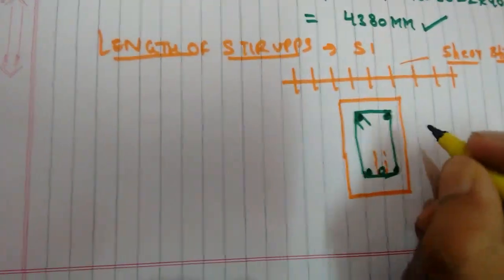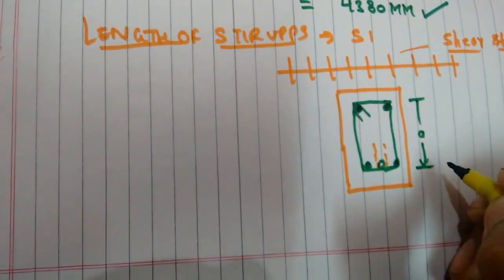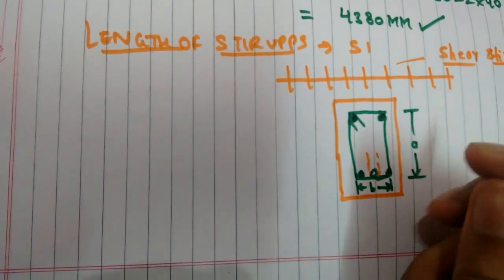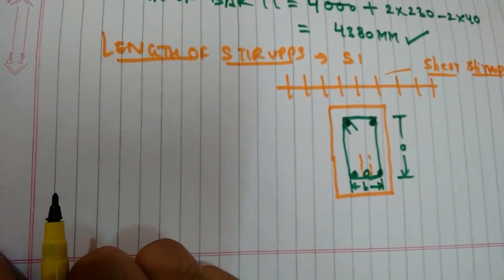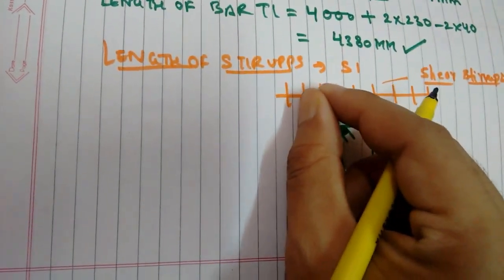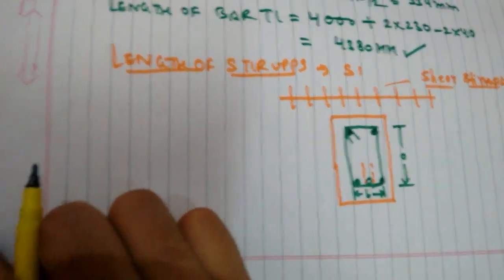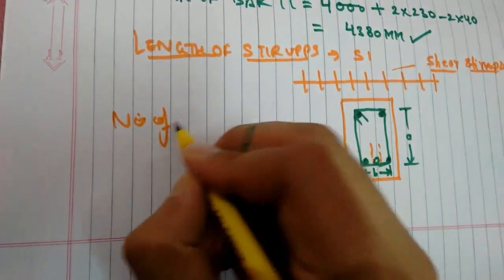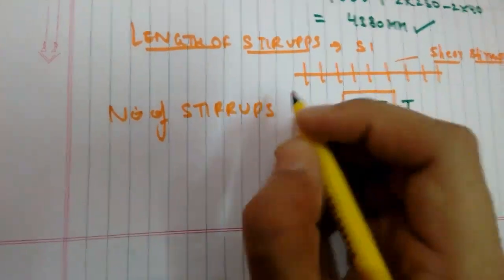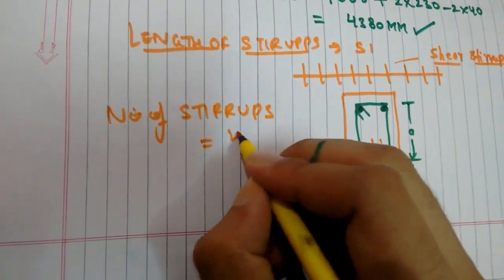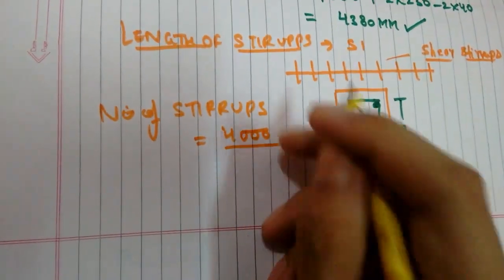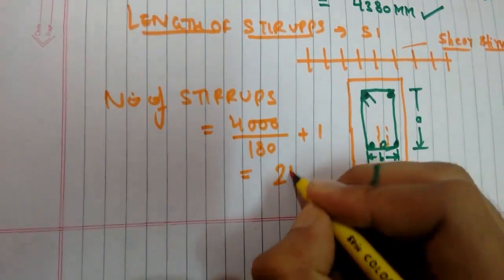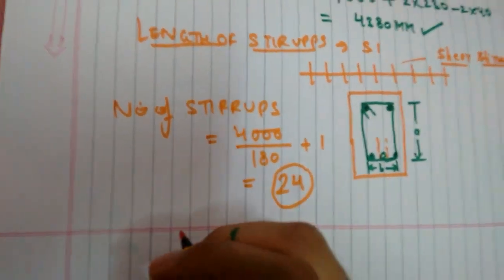This will be of part A and this will be of part B. Stirrups are placed 180 mm center to center, and stirrups are always provided between walls or supports for a beam. The number of stirrups for a given beam is equal to 4000 divided by the spacing plus 1, which gives a value of 24.